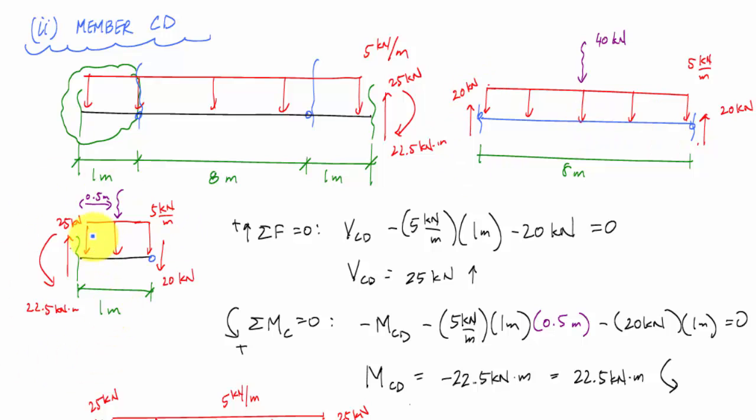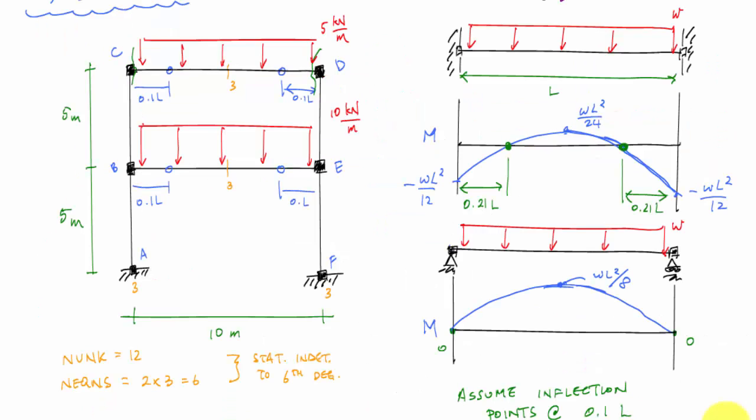So I know my reactions here just from symmetry were just 20 each. And then I went to here and then I can just do sum of the forces in the vertical, sum of the moments, and I get my end moments and then I can draw my shear moment diagrams. And now we're going to go through the same process for member BE over here. And all we're going to do is just cut it out right here. Bam and bam.